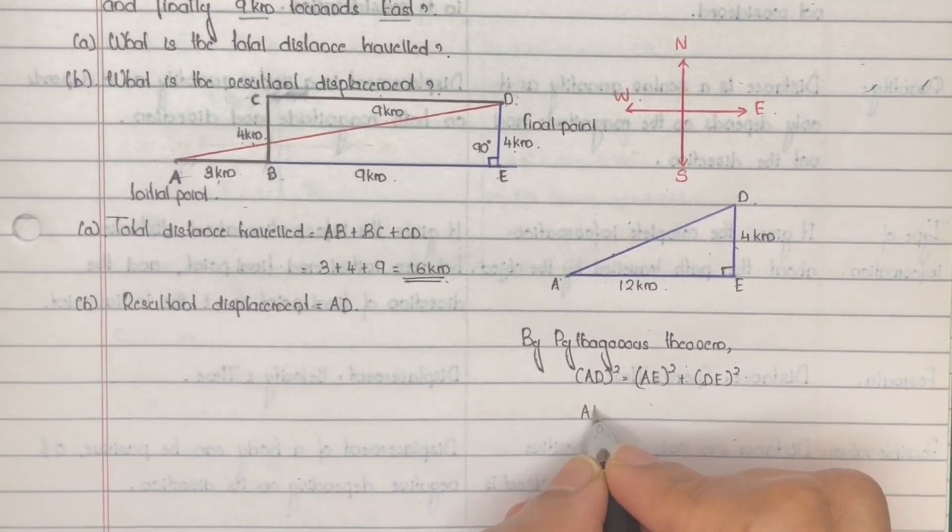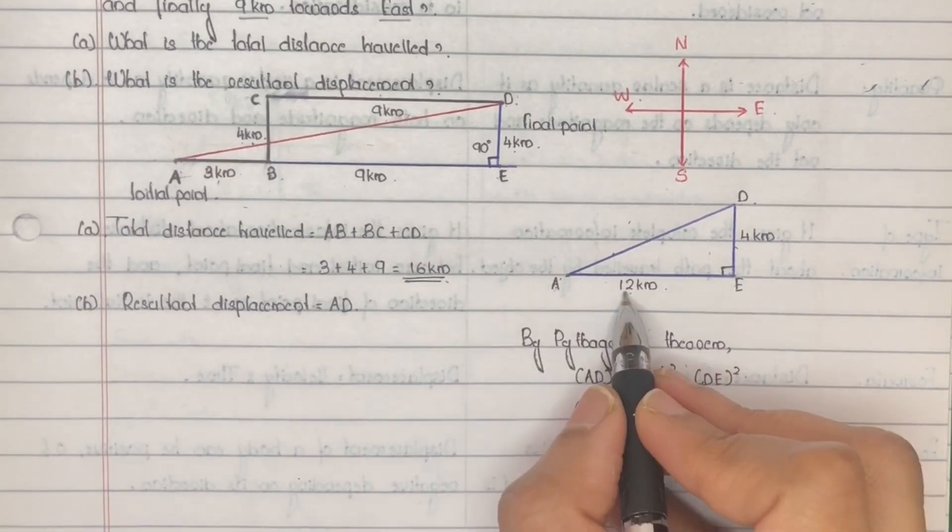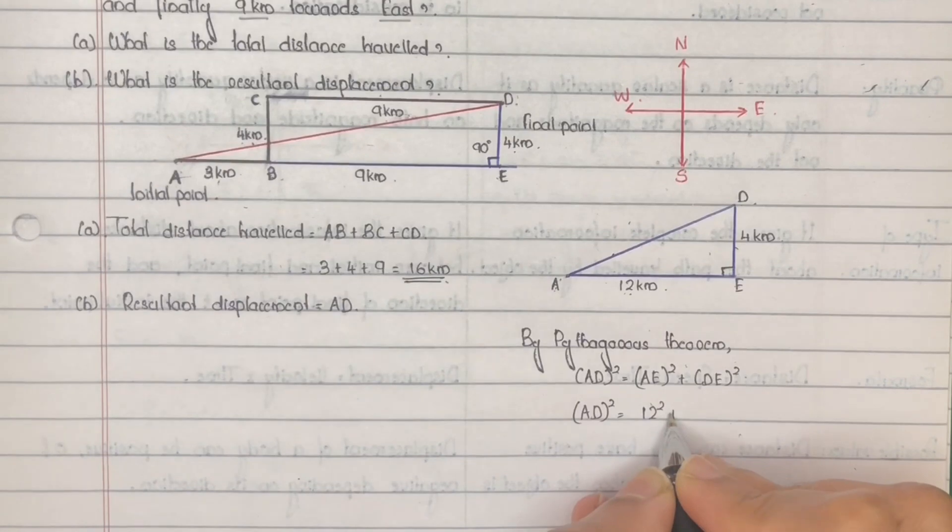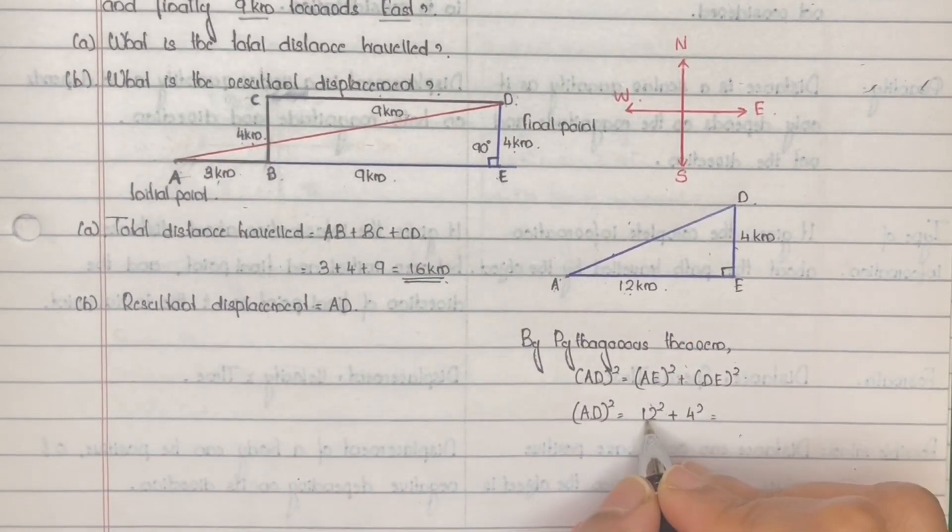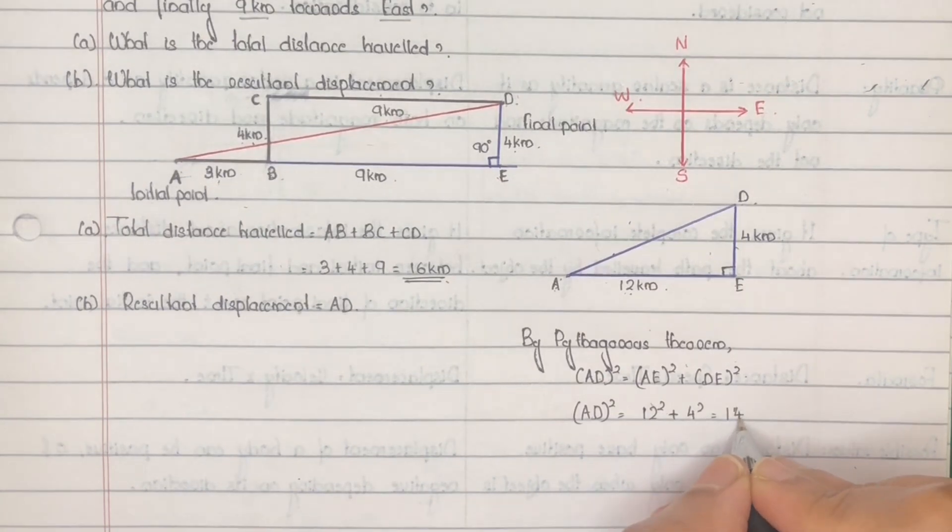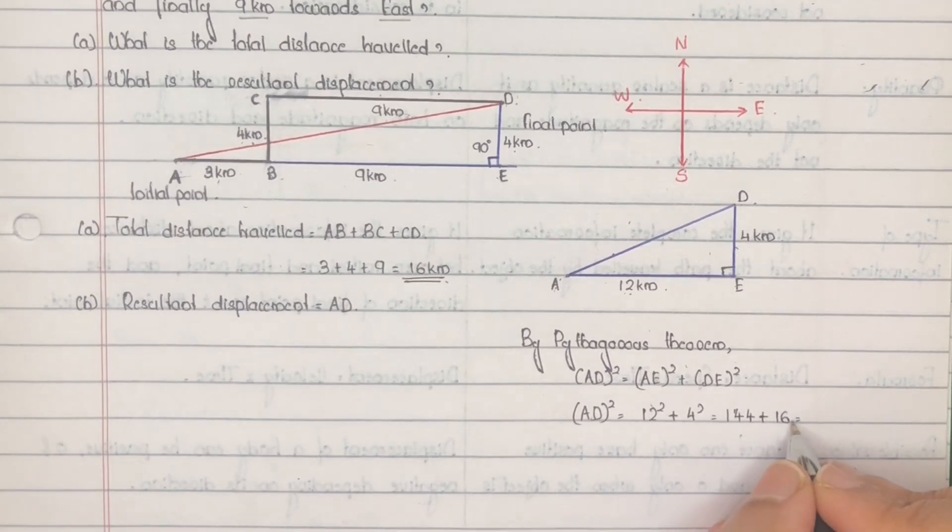So AD² is equal to 12² plus 4². 12² is 144 plus 4² is 16, equal to 144 plus 16 is 160.